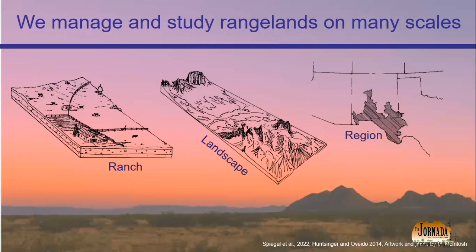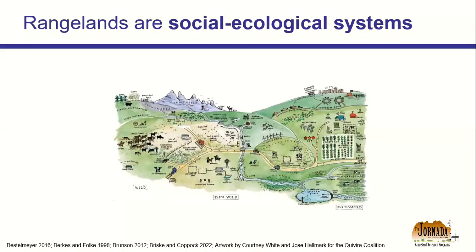When I look around the room I see a powerhouse of knowledge about rangelands. Collectively we study or manage rangelands on the ranch, landscape, and regional scales, and on these scales rangelands can be considered social ecological systems. How many have heard of social ecological systems before?